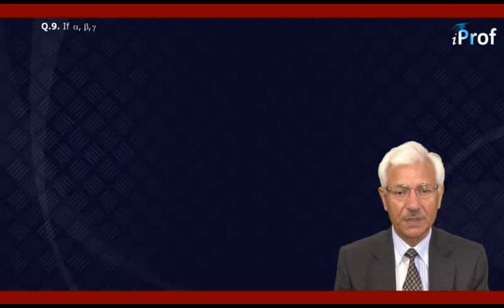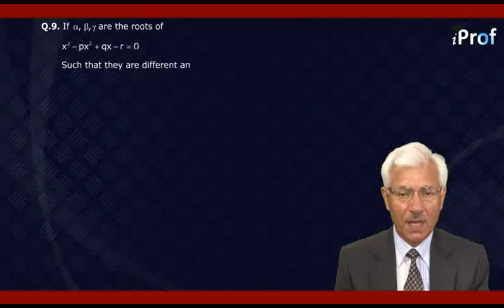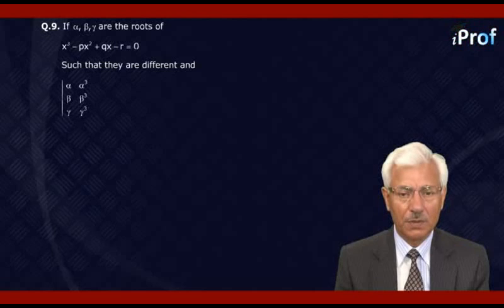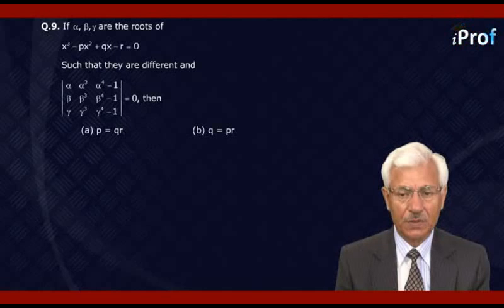If α, β, γ are the roots of the equation x³ - px² + qx - r = 0, such that they are different, and the determinant formed by first column (α, β, γ), second column (α³, β³, γ³), third column (α⁴-1, β⁴-1, γ⁴-1) equals 0. Then the options are: p = qr, q = pr, r = pq, or none of these.